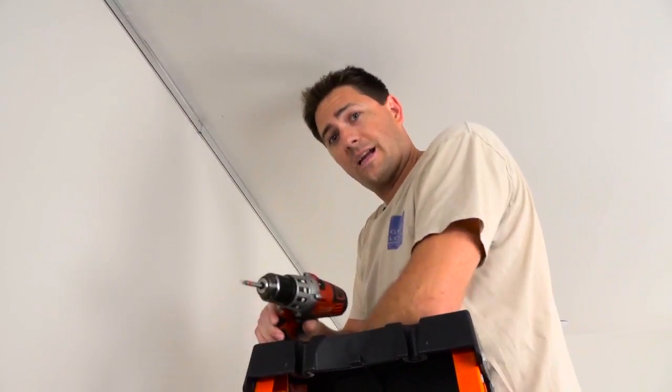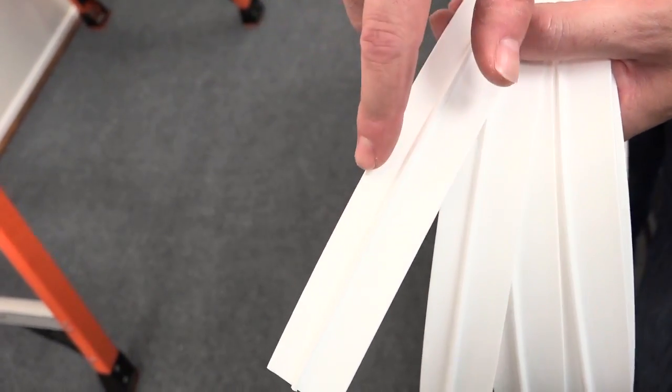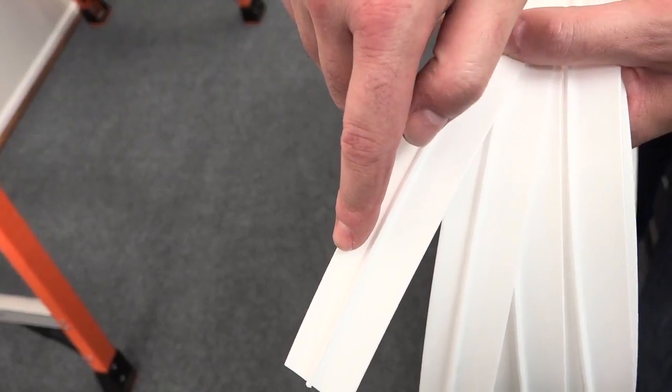Now that we have our last screw in, it's time for the track cover. This is the art track cover. As you can see, the barb is not in the center. The shorter end goes to the top so it doesn't interfere with the ceiling.